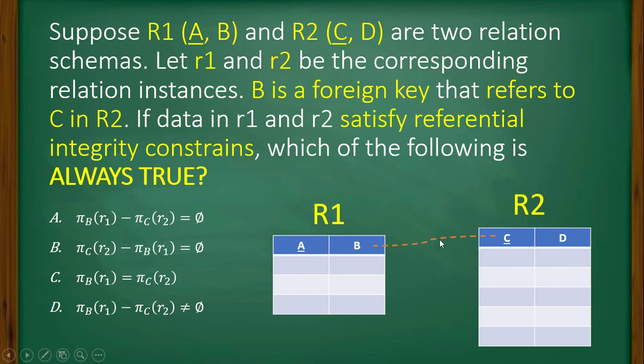If this is the situation and it is said that this instance of small r1 and r2 maintains or satisfies referential integrity constraint, that means that if there is a value here